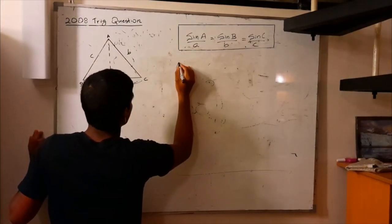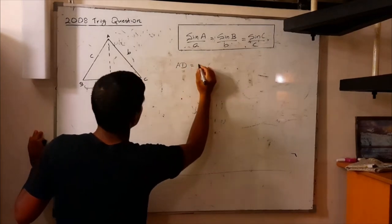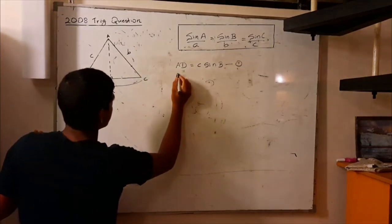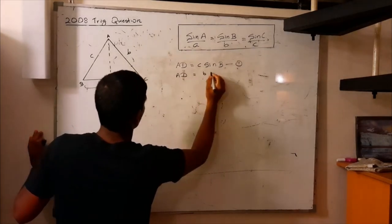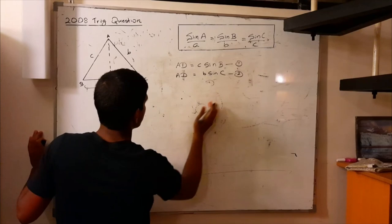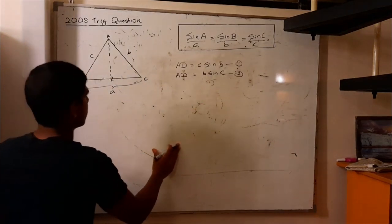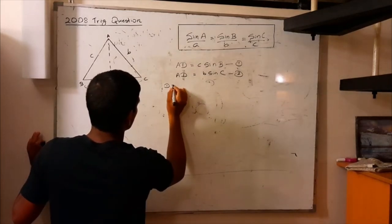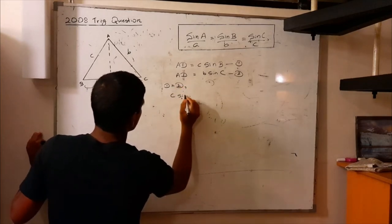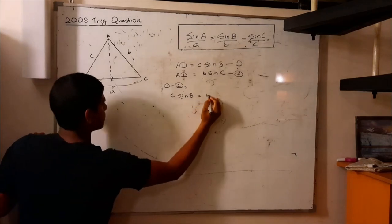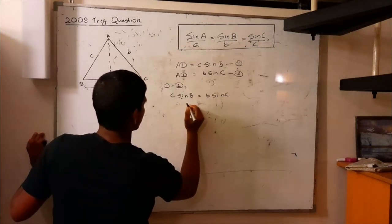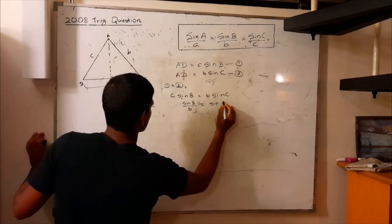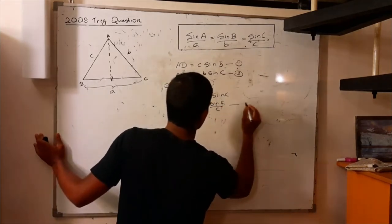We can write AD equals c sin B, and we can also write AD equals b sin C. We have expressed AD using different variables in two different equations. We can equate the two equations and say c sin B equals b sin C. Therefore, by cross-multiplying, we can say sin B over b equals sin C over c. This can be equation A.